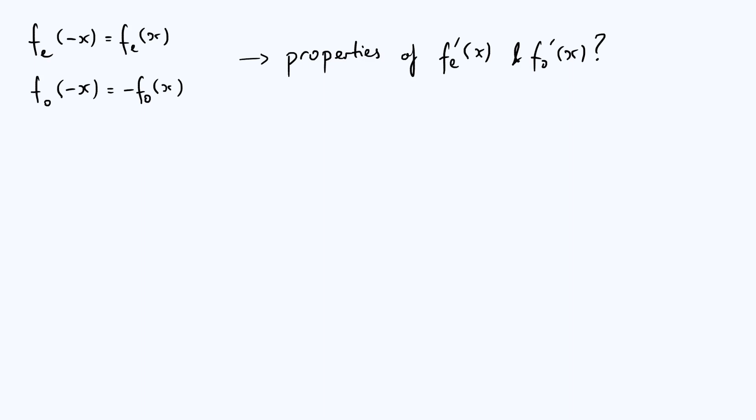So we're going to start with an even function fe of x which has the property that if you flip the sign of its argument the function remains unchanged, and an odd function fo of x where if you flip the sign of the argument the sign of the function also flips.